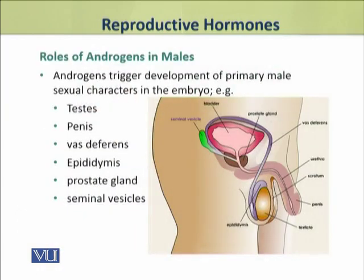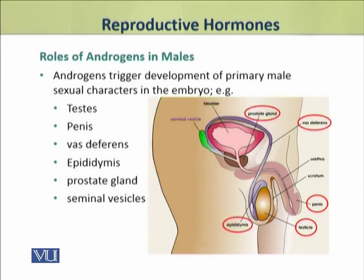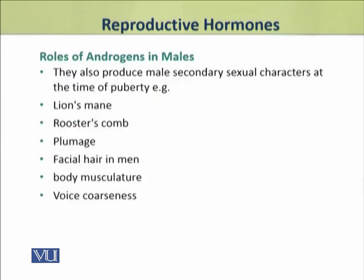Now we shall discuss the roles of androgens in males. Androgens trigger the development of primary male sexual characters in the embryo, for example: testes, penis, vas deferens, epididymis, prostate gland, and seminal vesicles. All these characters are called the primary male sexual characters, and they are formed because of the action of androgens in the embryo.